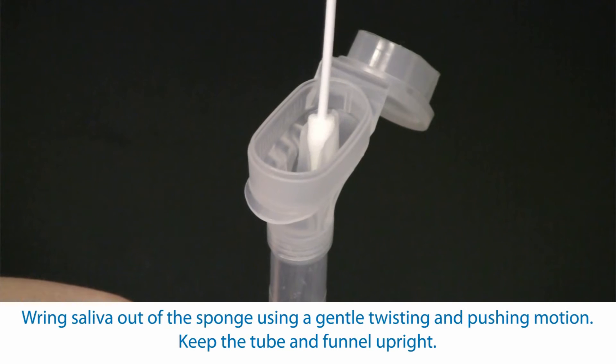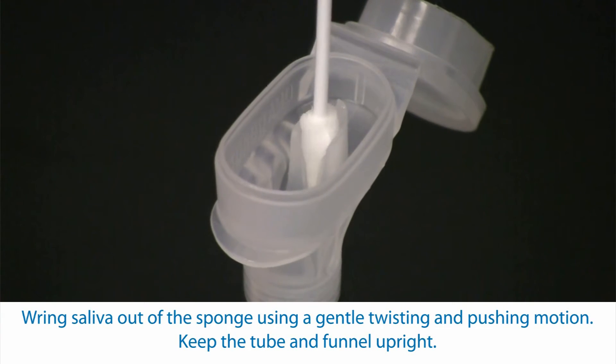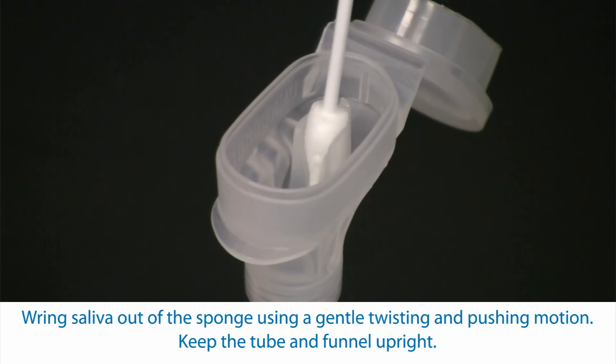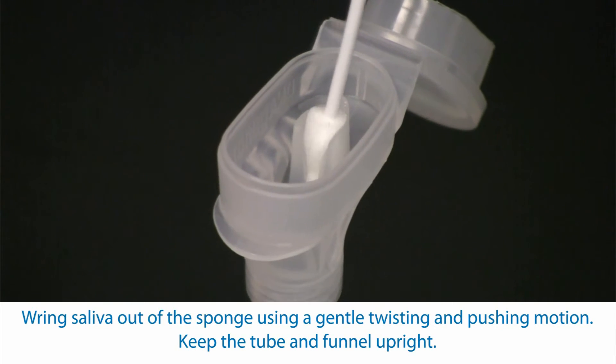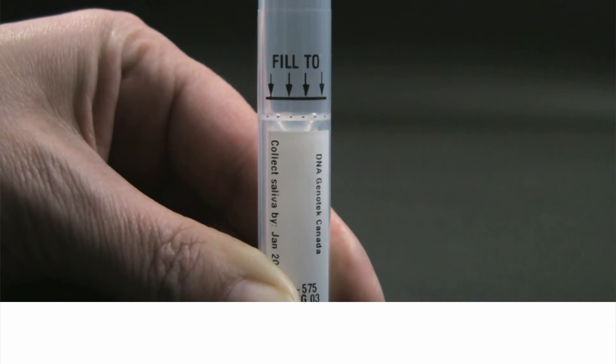Ring saliva out of the sponge using a gentle twisting and pushing motion against the inner wall of the V-notch. You will see saliva flow into the tube. Keep the tube and funnel upright. It may take several passes within the mouth to obtain a noticeable amount of saliva.